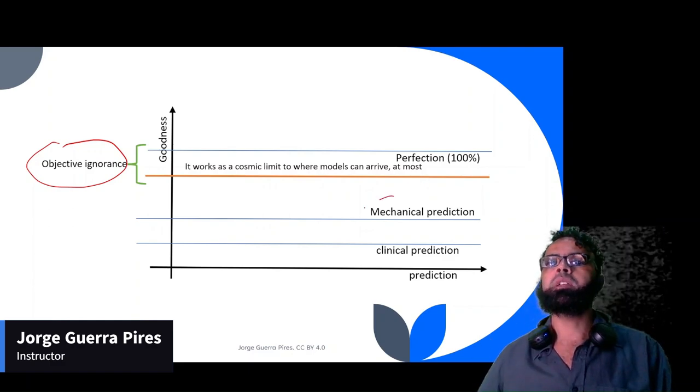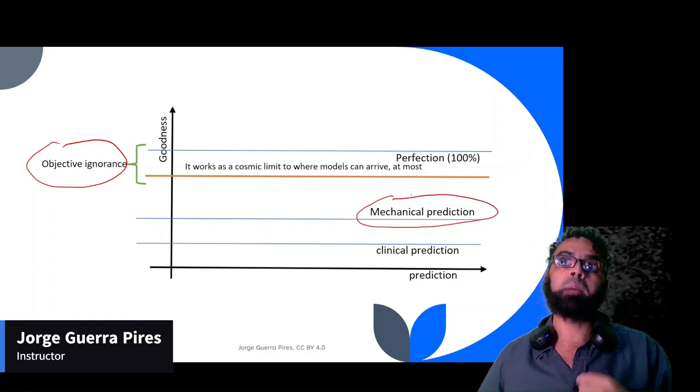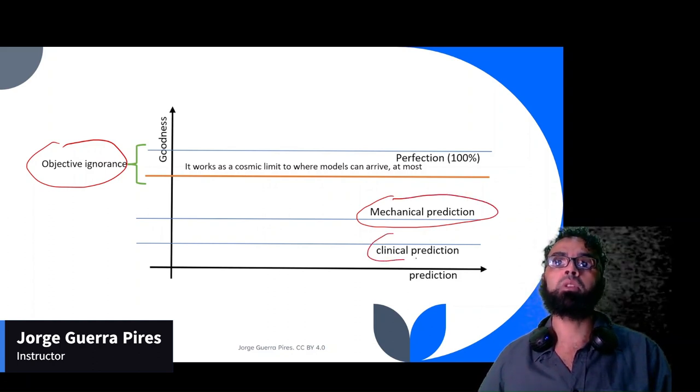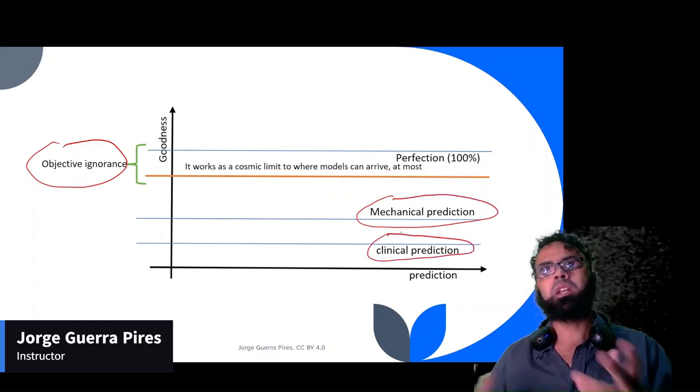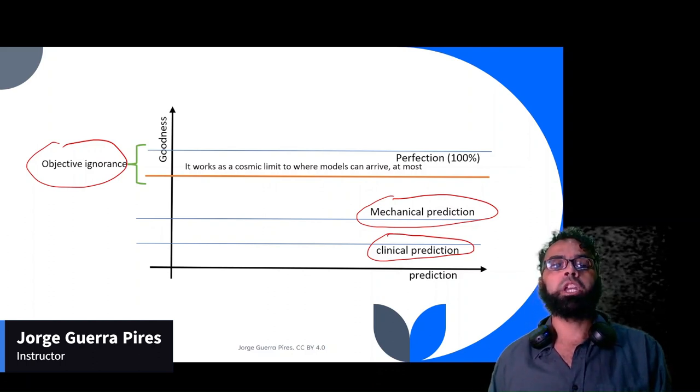Daniel Kahneman called this mechanical judgment, which I believe is better than human judgment. Human judgment is called clinical judgment. Economists have shown that mechanical judgment can be better in a lot of situations.